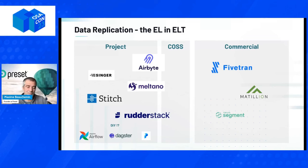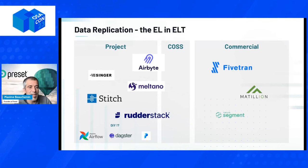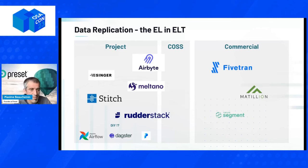On this slide I also put Segment and Rudderstack, which align a little differently — they're slightly different from your typical data sync type system and are more of a transport layer, often for customer data specifically. If you're looking into Segment, you should definitely take a look at Rudderstack too, which is very well supported by a vendor as well. On the do-it-yourself side, you can do some of these things in Airflow, Dagster, and Prefect, but I would really recommend using a managed product here — I think that makes a lot of sense.